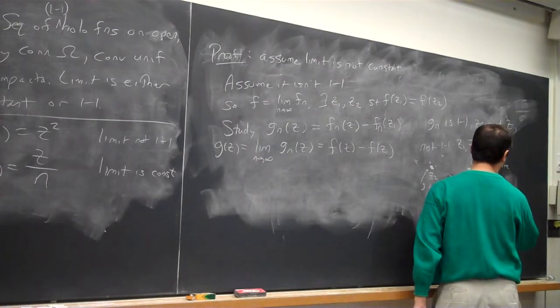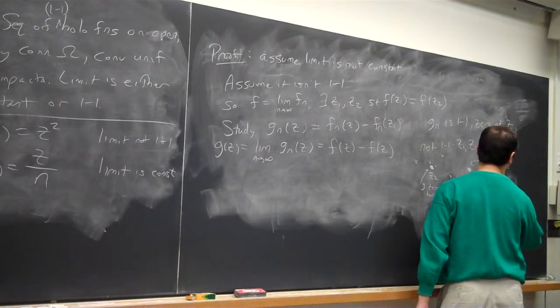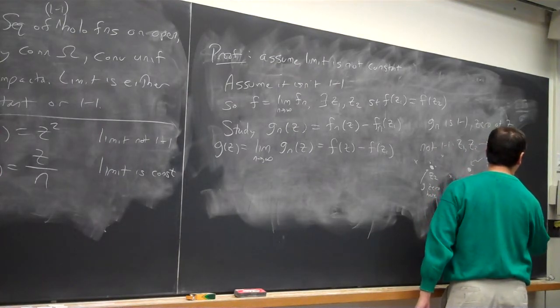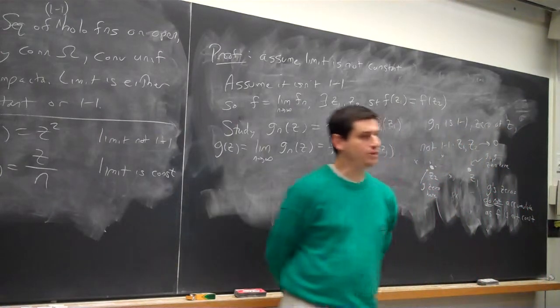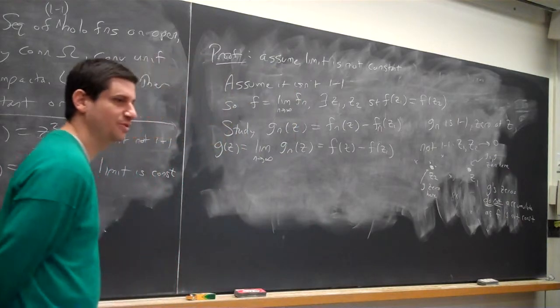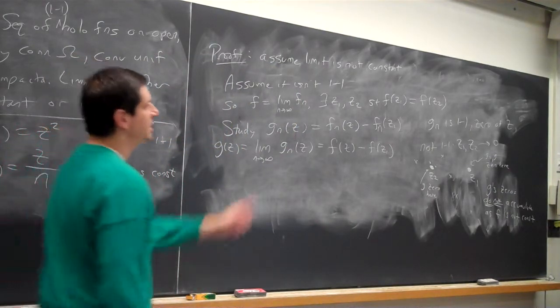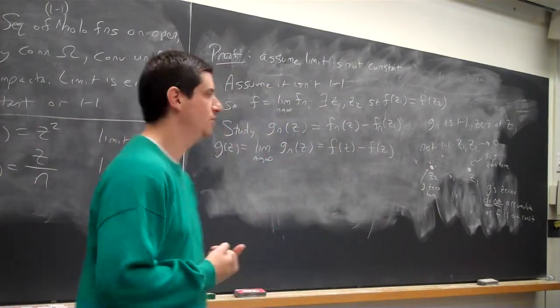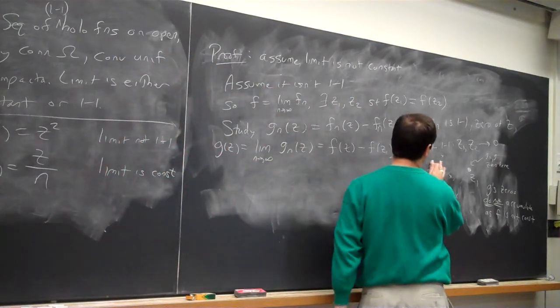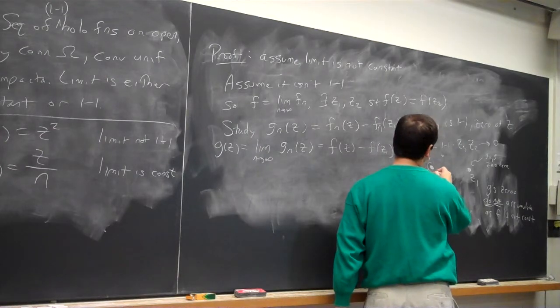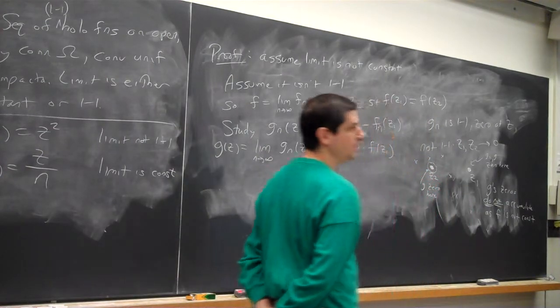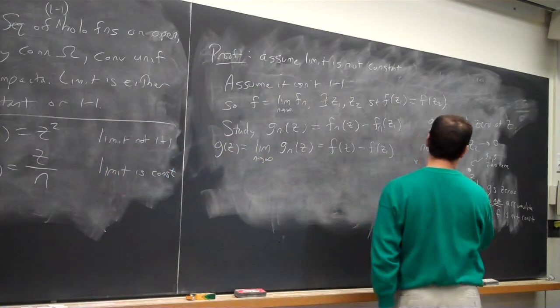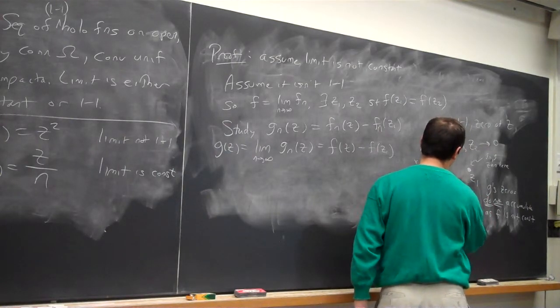As f is not constant. So, whenever you're doing the problem, somehow the condition should come into the proof. Where are we using the fact that f is not constant? This is where we're using it. We're using it in the fact that the zeros of g cannot accumulate. So what does it mean if they don't accumulate? It means I can draw a small disk, a small ball, about z_2, and there will be no zeros of g inside.